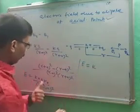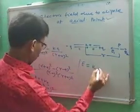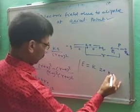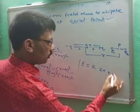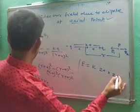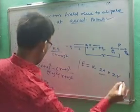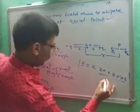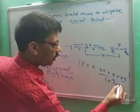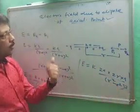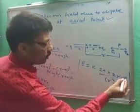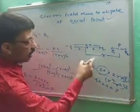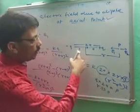We can rewrite 4RA as 2A times 2R. The expression becomes E equals K times Q times 2A times 2R divided by (R squared minus A squared) squared. Since Q times 2A equals P by the definition of electric dipole moment, we substitute P. Also, since R is much greater than A, A is neglected.